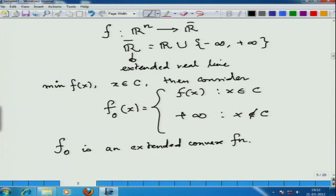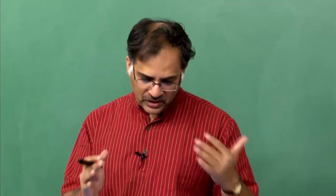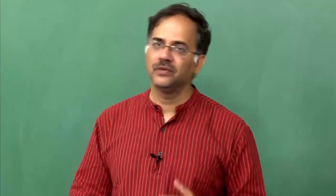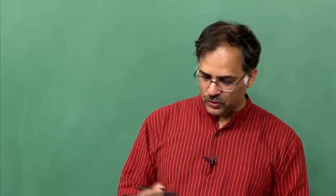Those who know some optimization may recognize this as a penalization: if you violate the constraint, you impose an infinite penalty theoretically. This is a theoretical model of the penalty function method, which is quite a common method in solving constrained optimization problems. When we define extended convex functions, we have to have certain rules for infinity and minus infinity. We will come into those rules as and when required.